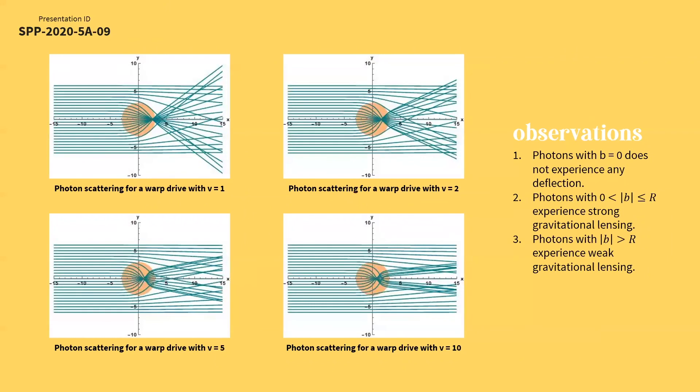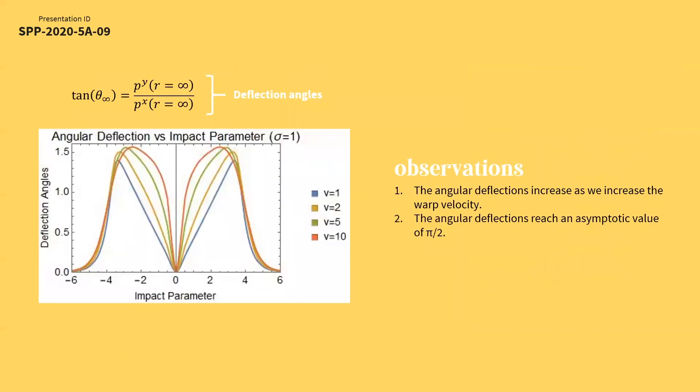These are the visualizations of scattering of light in the Alcubierre warp drive of different warp speeds. Notice that photons around the image at vicinity of the warp drive experience strong lensing that makes light invert. Meanwhile, photons outside the warp drive vicinity experience weak lensing that makes photons tend to the center of the warp drive.